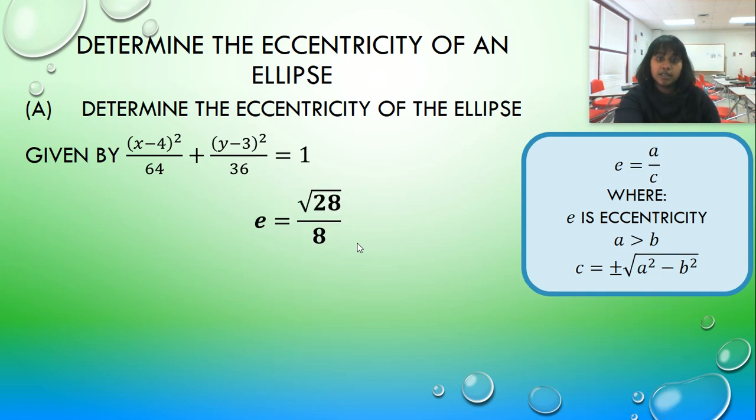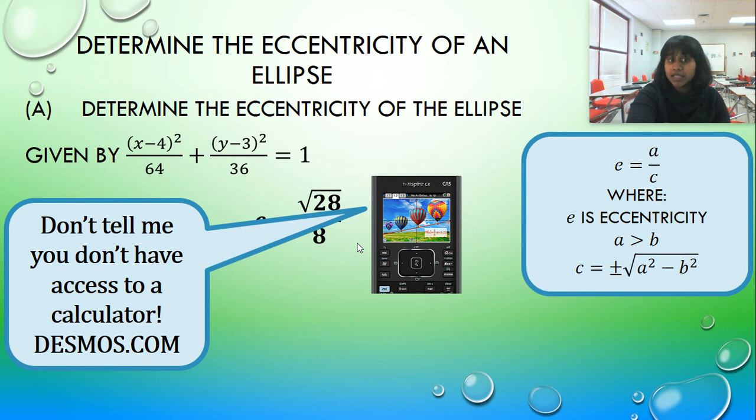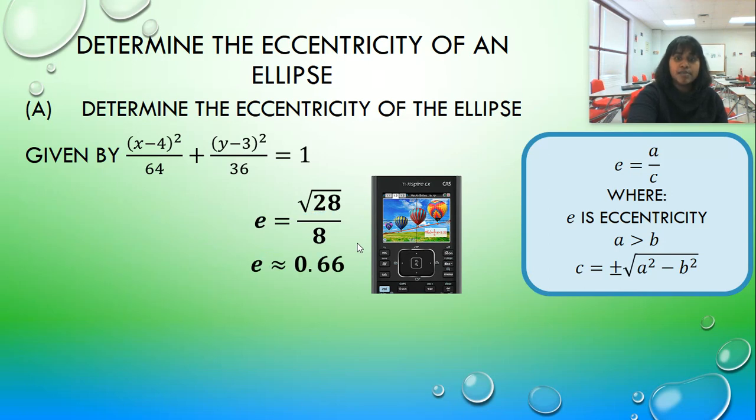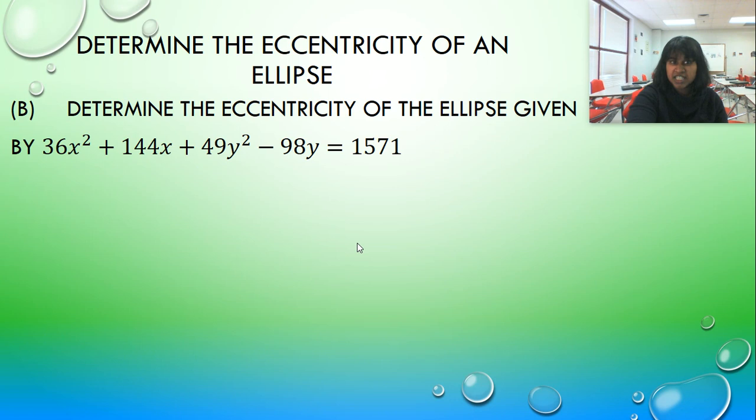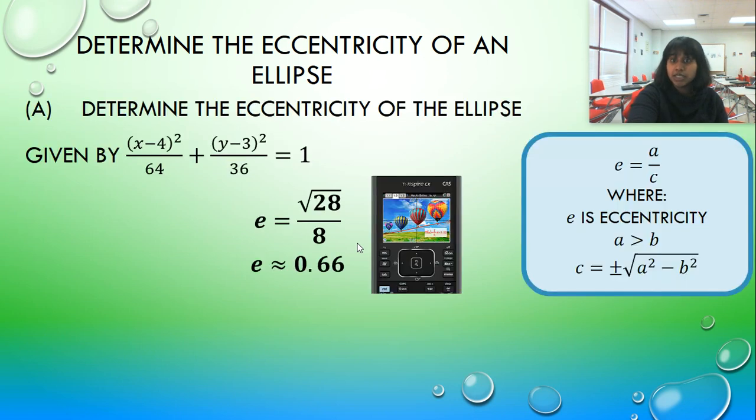We have to use a calculator to finish that solve. So I went ahead and plugged it into my handy dandy TI Inspire. If you don't have access to it, use Desmos.com slash calculator. Don't use scientific because it doesn't always give you a good number of decimal places to use. So we get approximately 0.666. That is our eccentricity.